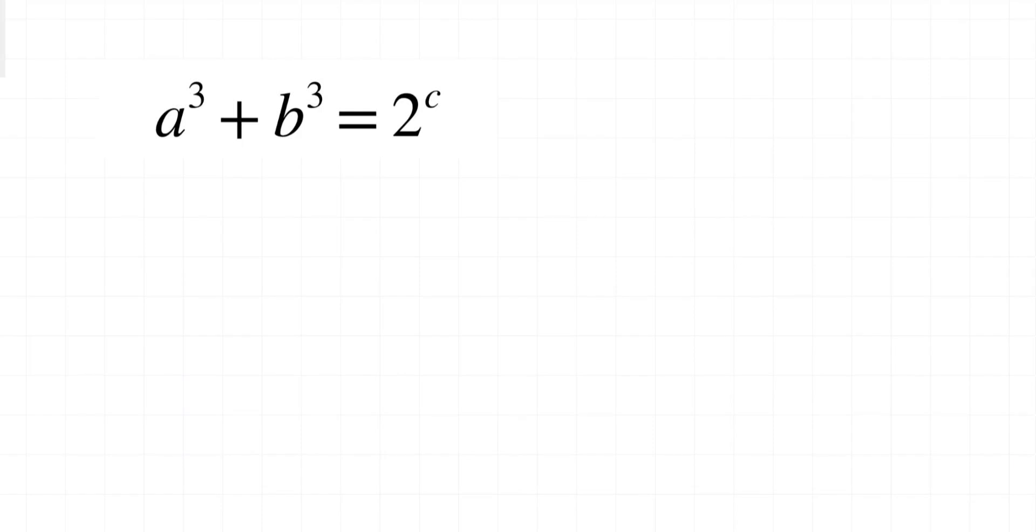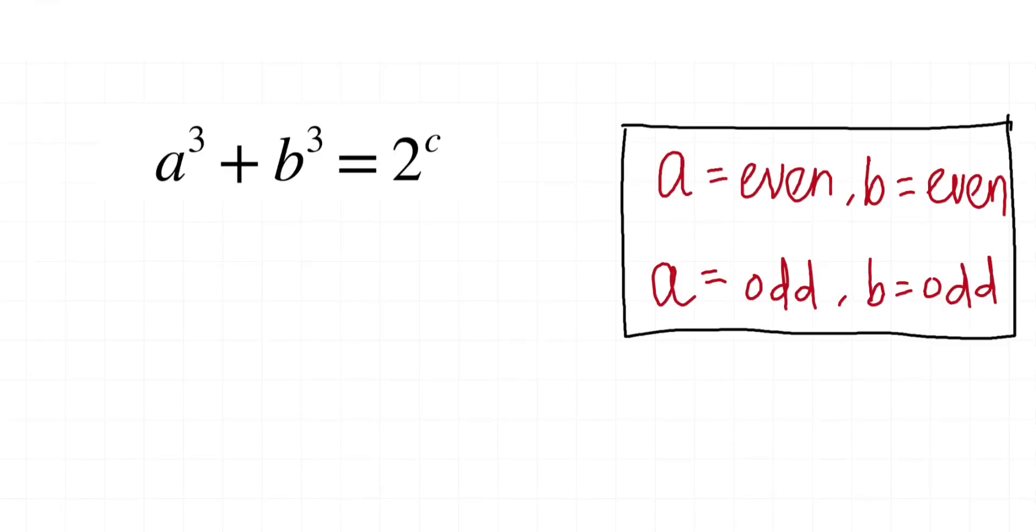So first we are going to do parity analysis. Parity analysis shows that either both A and B are even or both of them are odd. They cannot be one even and one odd.